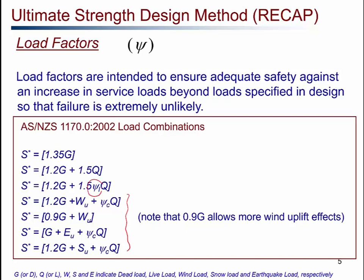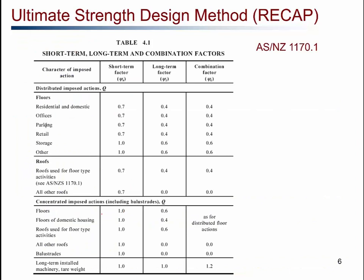In the load combinations, ψl and ψc designate the long-term load factor and the combination load factor respectively. For example, during an extreme wind event, it is very unlikely that extreme live load is occurring simultaneously — that's why the combination factor, which is less than one, accounts for the improbability of wind load and extreme live load acting at the same time. Once you calculate the factored loads, you calculate the design action effect based on the critical factored load. AS 1170.1 Table 4.1 gives the short-term, long-term, and combination factors for different structures.